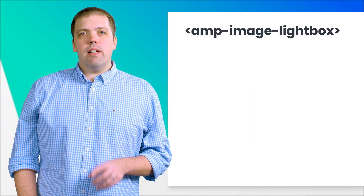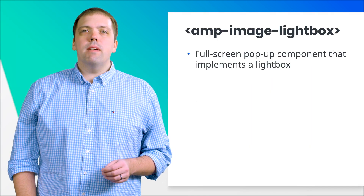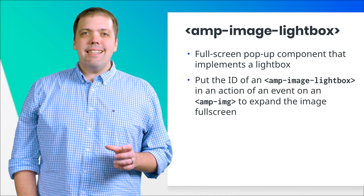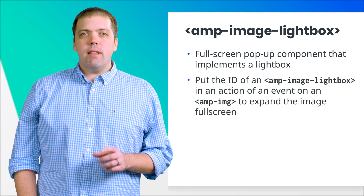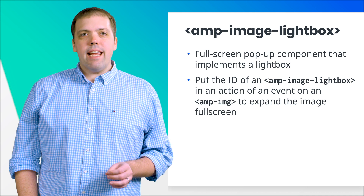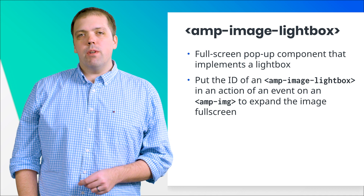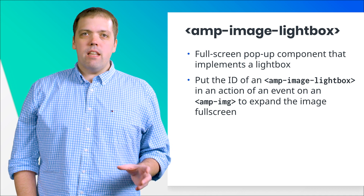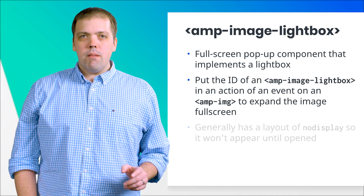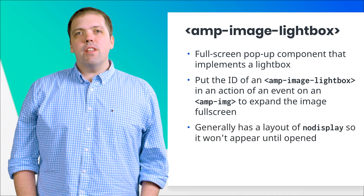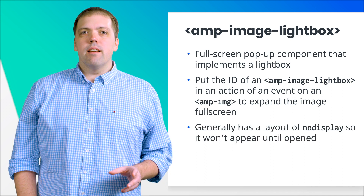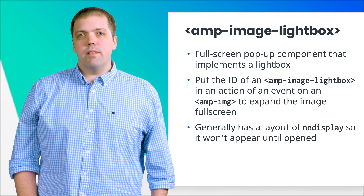AMP image lightbox is a component that implements a lightbox for an image. If you include the ID of an amp-image-lightbox in an event handler of an amp-image component, a lightbox containing that image appears and fills the screen. Typically, you give the amp-image-lightbox a layout of no display, so it's invisible until it's opened.